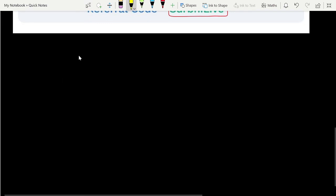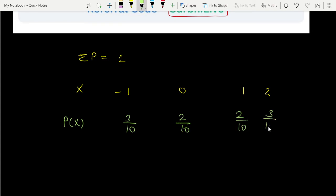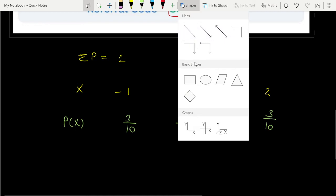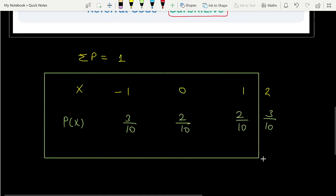So let's solve this question. You see, total probability is going to be one. Here different attributes have different probabilities of being selected. We can make a table where we write the values of X: -1, 0, 1, and 2. And the probability of selecting them, P(X), can be given as 3/10, 2/10, 2/10, and 3/10. These are the probabilities given in the question.